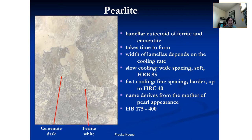Two different phases — ferrite and cementite. Ferrite is iron; cementite is Fe₃C. They're chemically different, so they react with the etchant differently, which is why we can see them. That's really cool — pearlite.